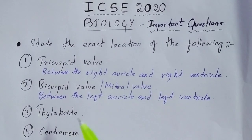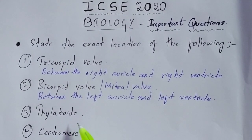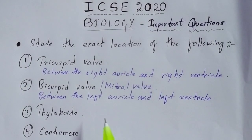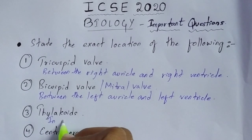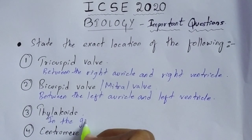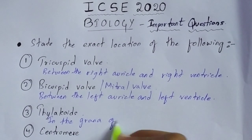The next question is thylakoids. You have to give the exact location of thylakoids. Thylakoids are located in the grana of the chloroplast.